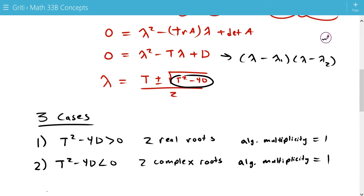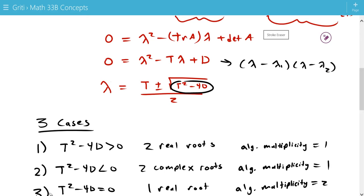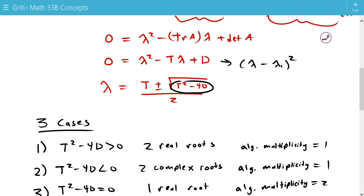So, for the first two cases, we would have got a λ1 and a λ2 that are separate, that have their own factors. For our third case, that is not the case. We have T² - 4D equaling 0, which gives us only one real root. So, that means this root comes up twice. So, it has an algebraic multiplicity of 2. So, its characteristic polynomial, once factored, would look like (λ - λ1)².